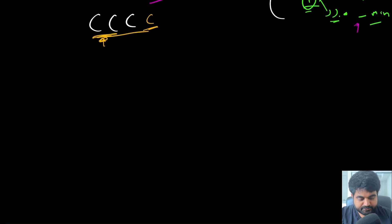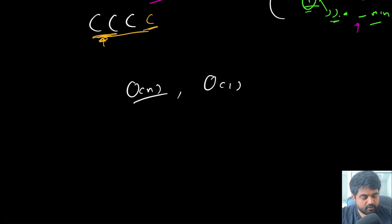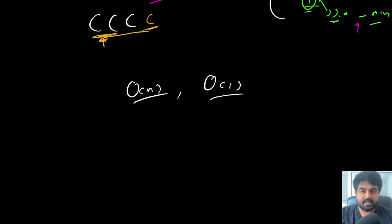The time complexity is O(n) since we do a single pass over the input. The space complexity is O(1) because we only use a couple of variables and no extra data structures. This is a very efficient solution.